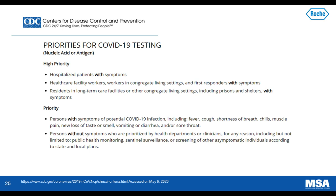As of May 6th, the CDC was recommending as high priorities for nucleic acid or antigen tests: hospitalized patients with symptoms, healthcare facility workers, workers in congregate living settings, and first responders with symptoms, as well as residents in long-term care facilities, prisons, and shelters with symptoms. This was updated to also include persons with symptoms of COVID-19 — including fever, cough, shortness of breath, chills, muscle pain, new loss of taste or smell, vomiting or diarrhea, and/or sore throat — or persons without symptoms prioritized by health departments or clinicians for any reason.